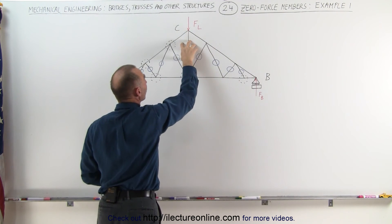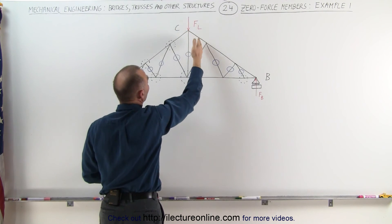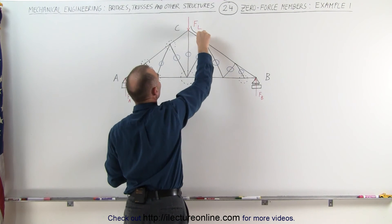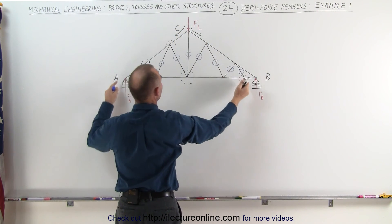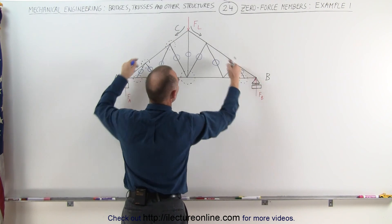but notice that if you eliminate this joint right here, the load force is then carried by those two members. It is distributed in this direction and in this direction and held by the two ends right here, which means that all those members here must be under tension.